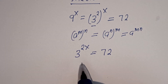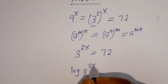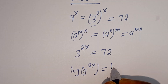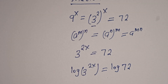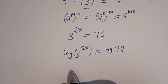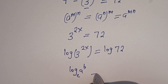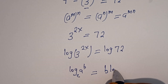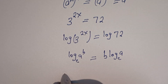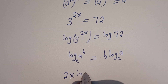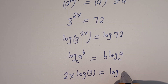We can take the log of both sides of this equation, that is log 3 to the power of 2x is equal to log 72. Take note that if you have log A to the power of B, this is equal to B log A. Then this can be written as 2x log 3 is equal to log 72.